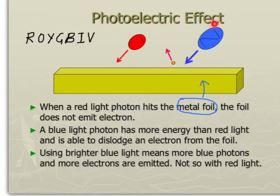Photoelectric effect. First of all, these are the seven colors of the rainbow. Red here, violet there. Red light photon has the least energy. Violet light photon has the most energy. Now we come to this diagram here. That's a metal foil. That's a red light photon, with the least energy. That's a blue light photon, which has more energy. A red light photon hasn't got enough energy to dislodge an electron. Whereas a blue light photon has enough. So this electron is given off after this photon hits the metal foil. Here it says, using brighter blue light means more blue photons. And therefore more electrons are emitted or given off. Not so with red light. Doesn't matter how bright a red light you use, you will never dislodge any electrons. Because of the size of the red light photons being too small.